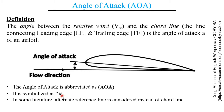In some literature or instances, instead of chord line an alternate reference line is also referred — such as in cases of a complete aircraft, where instead of chord line they use the middle line or the center line of the fuselage.